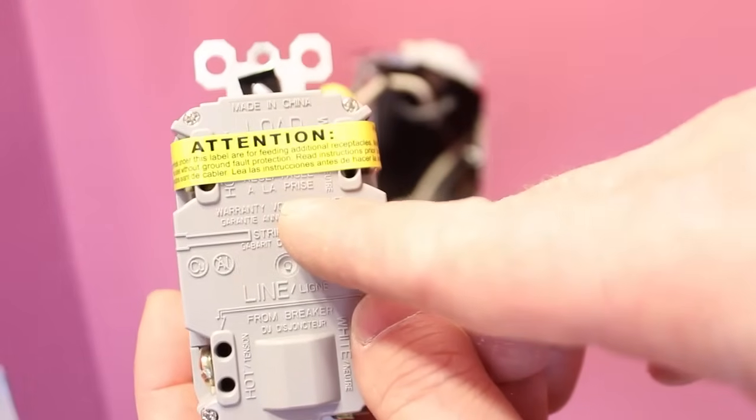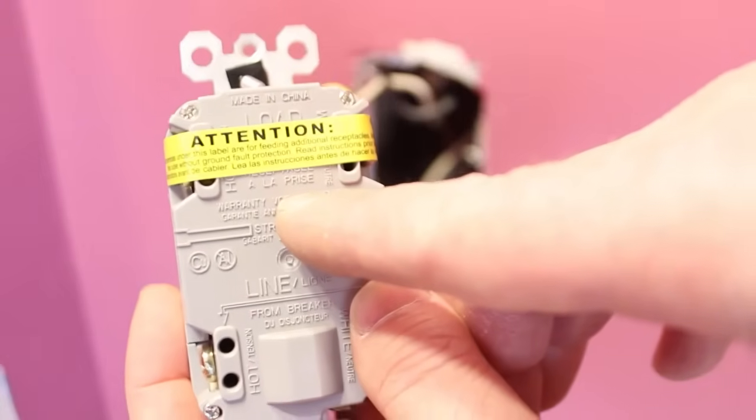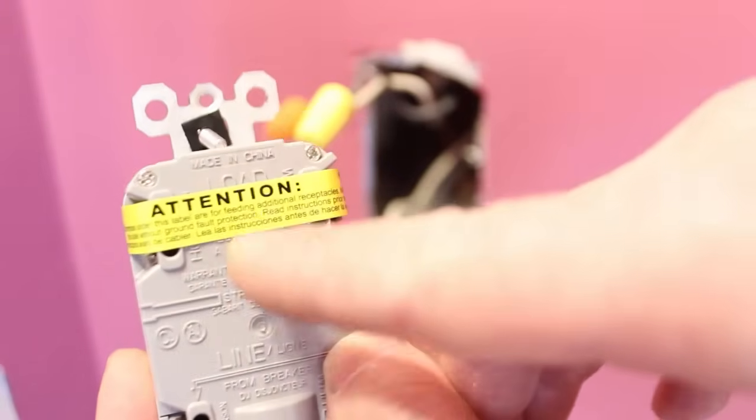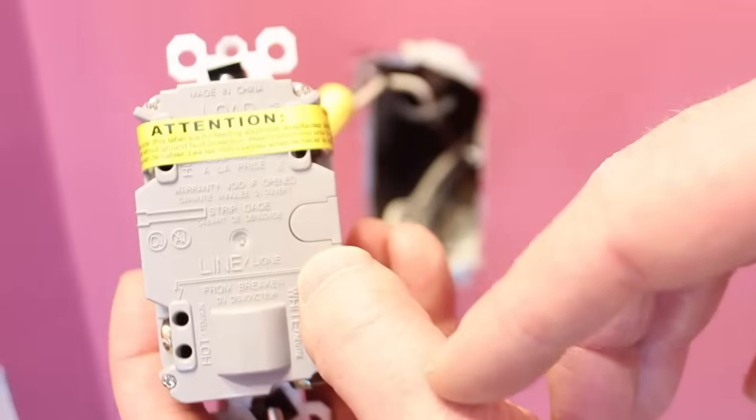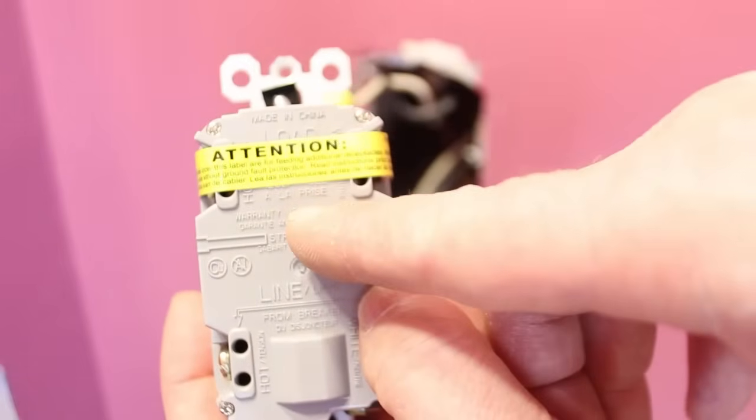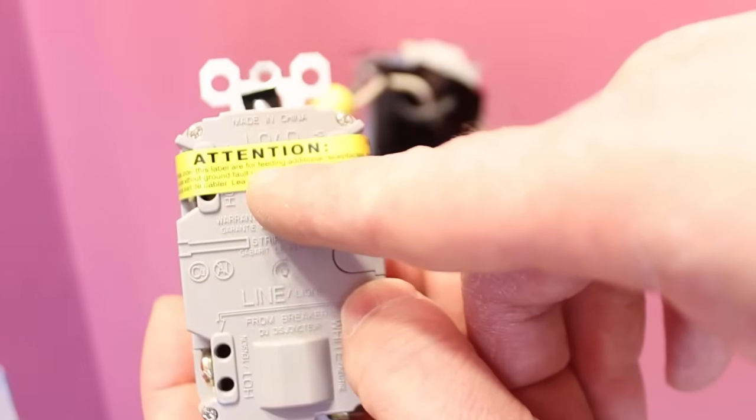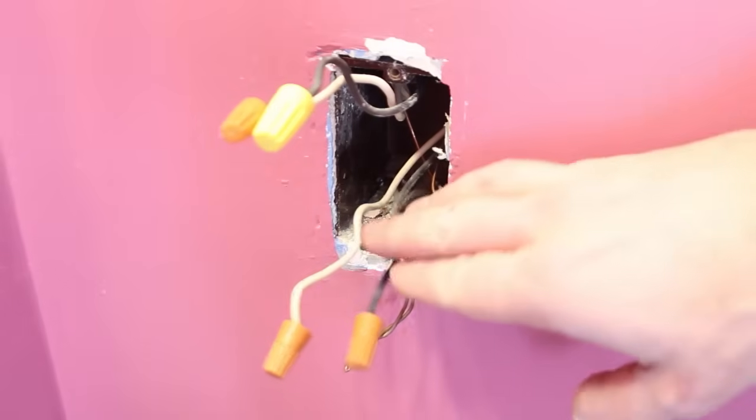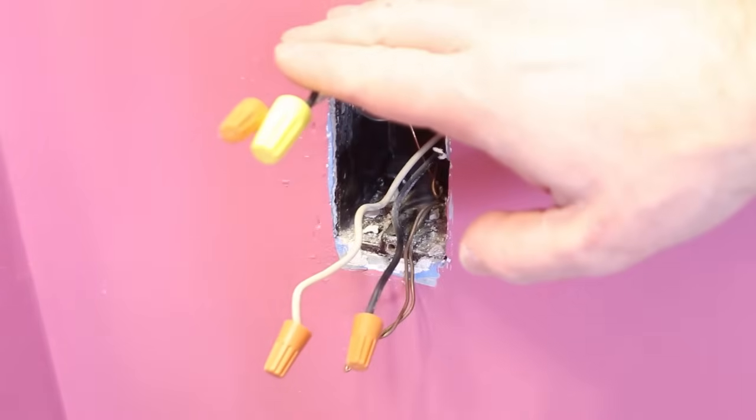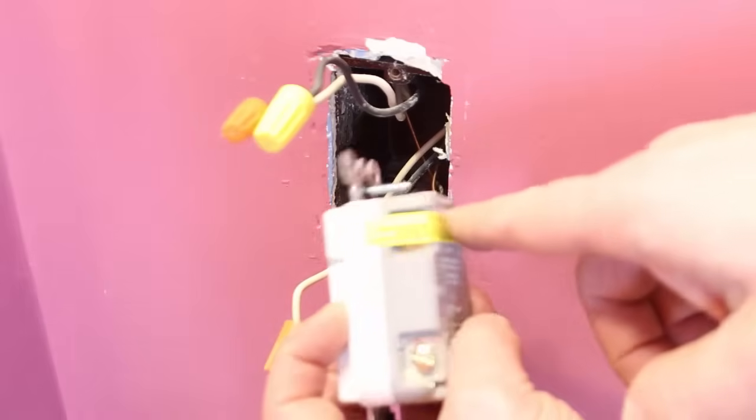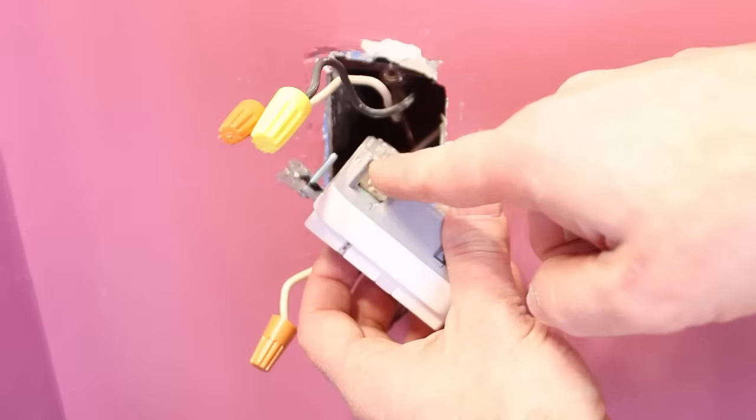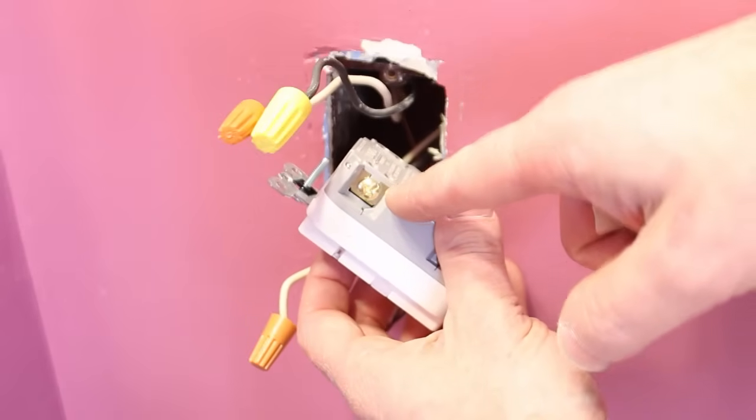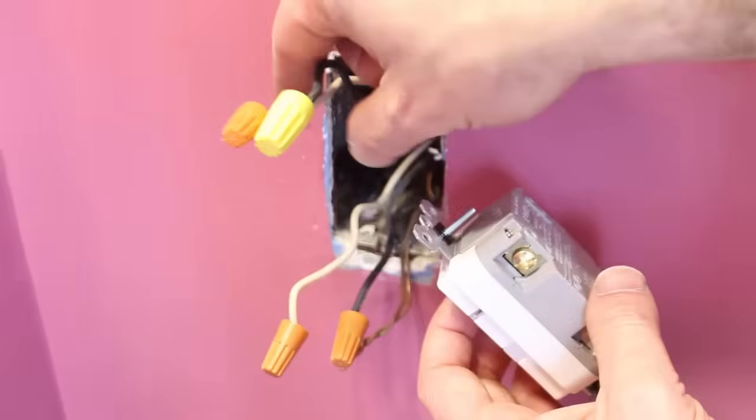Almost all GFCIs have a little yellow sticker that goes on the load terminals. So if you only have one set of wires going into your electrical box, you don't need to use the load terminals. But in this case, I have both line and load terminals, so I am going to take that sticker off. It kind of feels like tearing the tag off of a mattress, like you shouldn't be doing it. But in this case, yes, I am going to do it because I have both line and load wires.